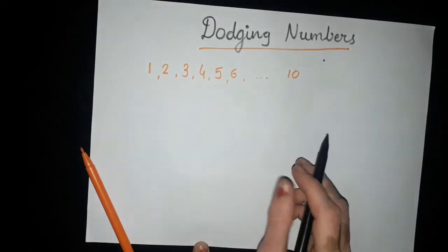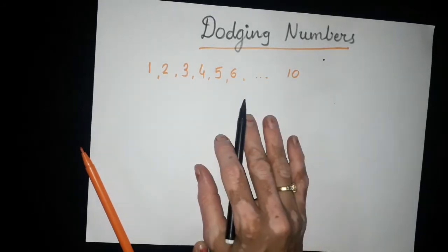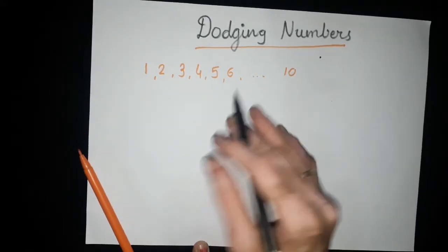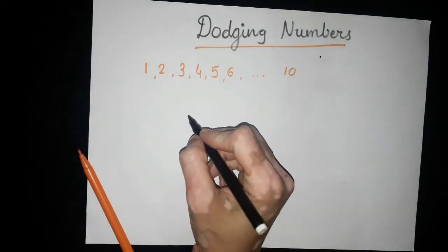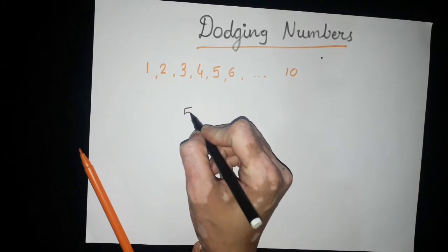What are dodging numbers? With dodging numbers, you will call numbers randomly and the child has to write that number. For example, you have to write five.